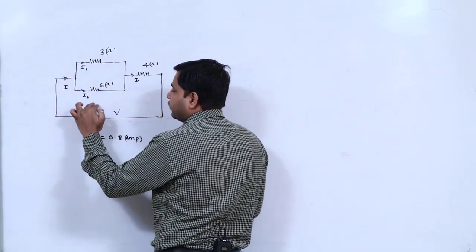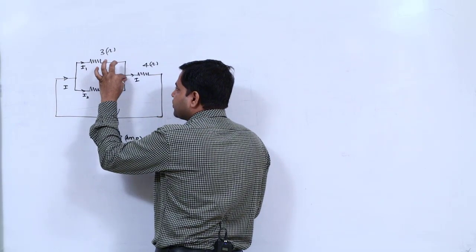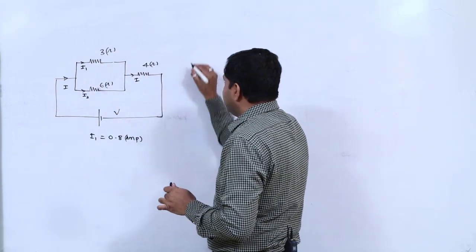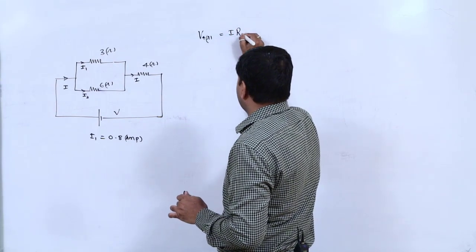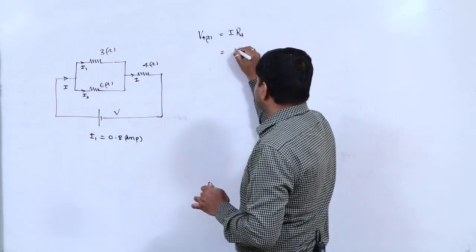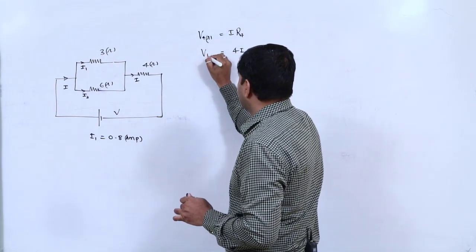Current coming is i and current going is i1, i2. Both will go and both will return, so i will come back. The potential difference across 4-ohm will be i into R4. R4 is how much? So 4 into i, you get 4 ohm.